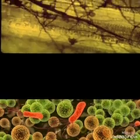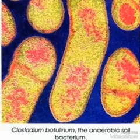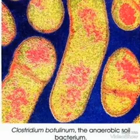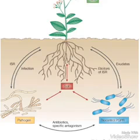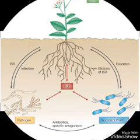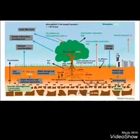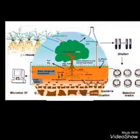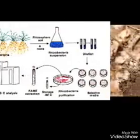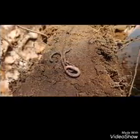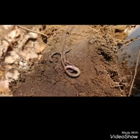Soil microorganisms play a key role in nutrient cycling. The factors affecting the distribution, activity, and population of soil microorganisms are: first, soil fertility; second, cultural practices; third, soil moisture; fourth, soil temperature; fifth, soil aeration; sixth, light; seventh, soil pH; eighth, organic matter; ninth, food and energy supply; tenth, nature of soil; and eleventh, microbial association.